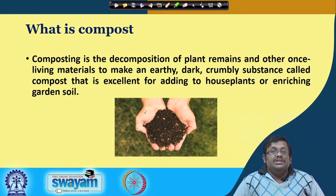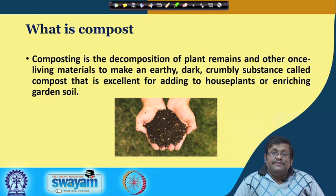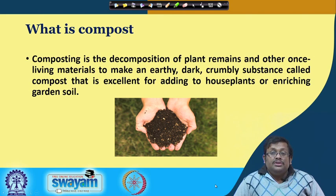Compost is a decomposed organic matter which contains a high amount of nutrients. People generally use compost to enrich different types of garden crops and vegetables. There are several types of composting methods, and composting is one of the major soil organic manures.